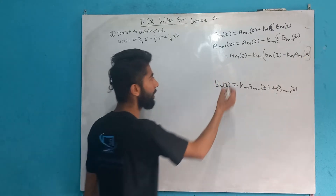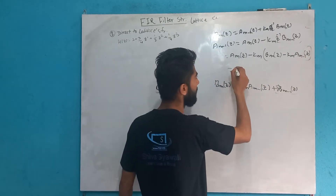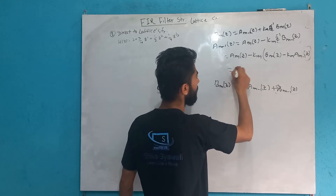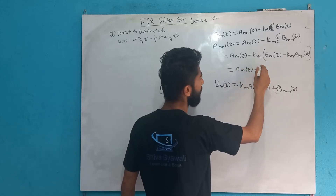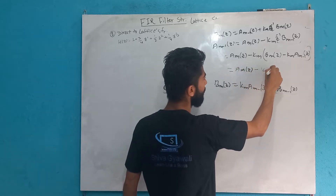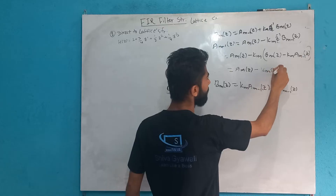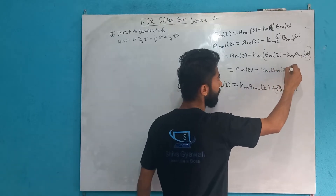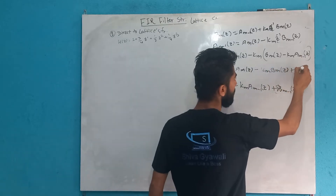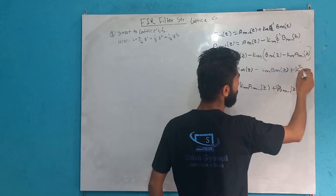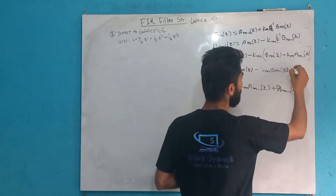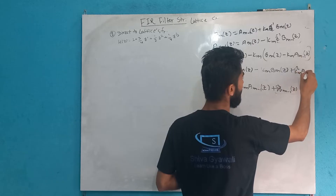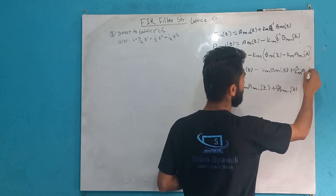Now I am going to show you the formula for B_{m-1}(z). The formula involves z^{-2} * B_{m-1}(z), and terms A_m(z) * B_m(z) plus k_m^2 * A_{m-1}(z).